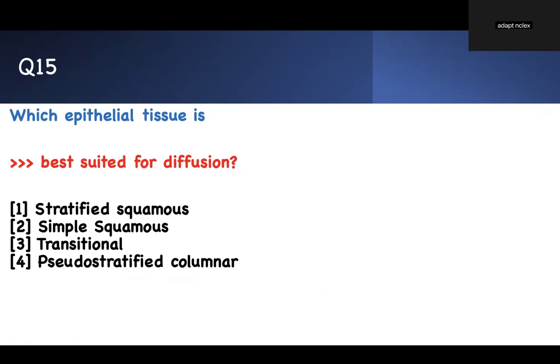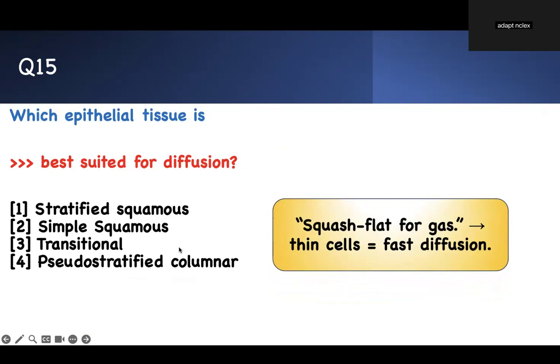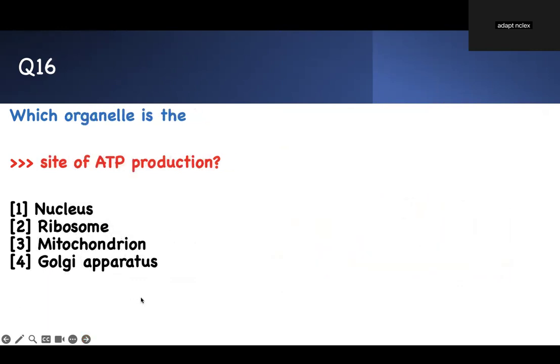Which epithelial tissue is best suited for diffusion? Diffusion needs small, small, small cells. Therefore, the mnemonic is squamous, flat, for gas. Squamous, flat, thin, for gas. Therefore, stratified squamous or simple squamous, transitional, or pseudostratified. Stratified is thicker than simple. We want a very thin cell to allow diffusion. Therefore, number two is the right answer. I'm using the keywords in the question. And that's what you should do. Don't look at the answer choice.